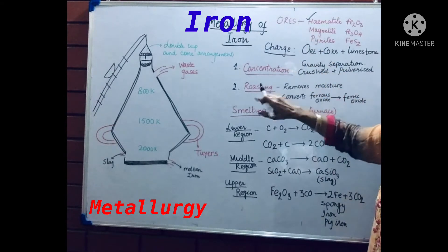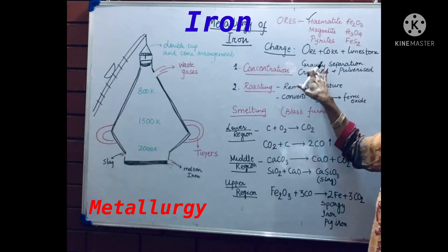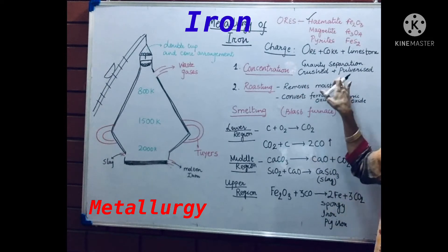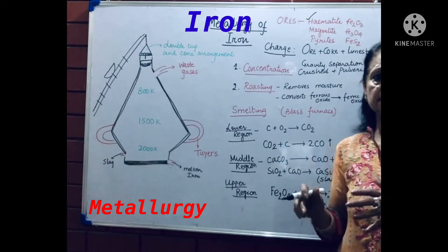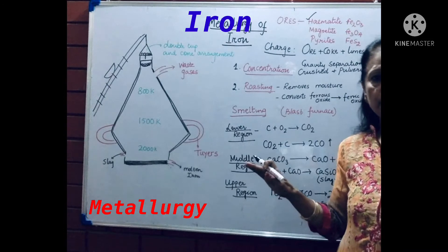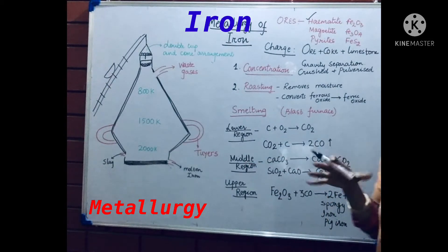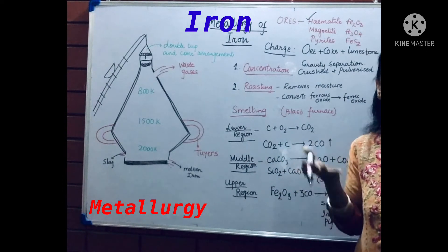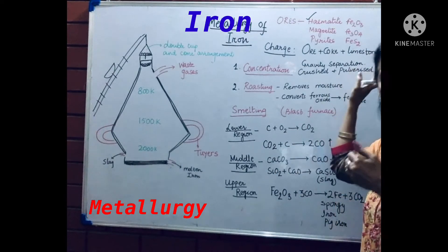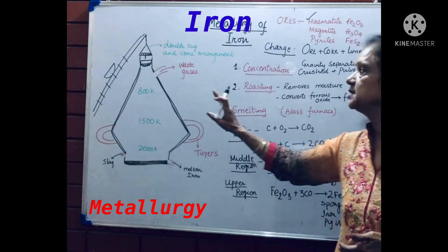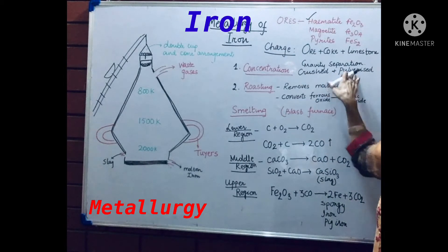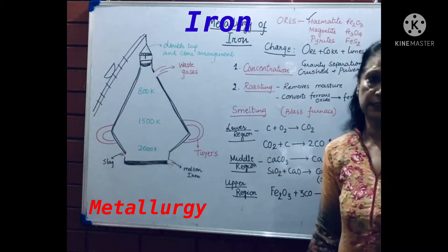Firstly, the ore is concentrated by gravity separation and then it is crushed and pulverized. Crushed and pulverized means it is changed into a fine powder, and some air is bubbled into it so that it becomes very light and can be transported from one place to another easily. The next step is called roasting.